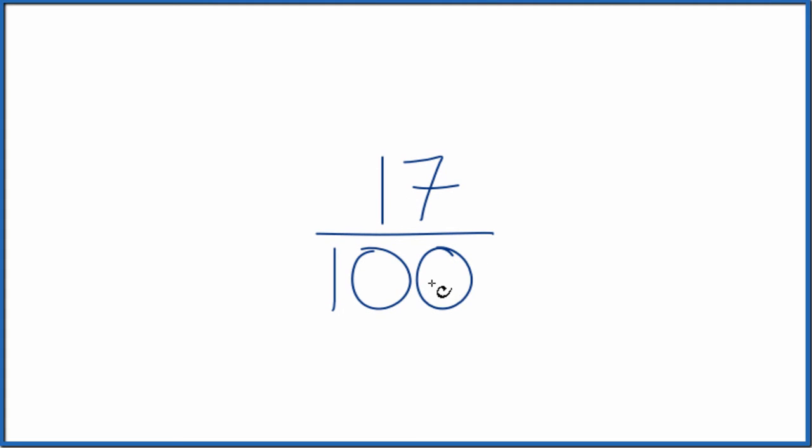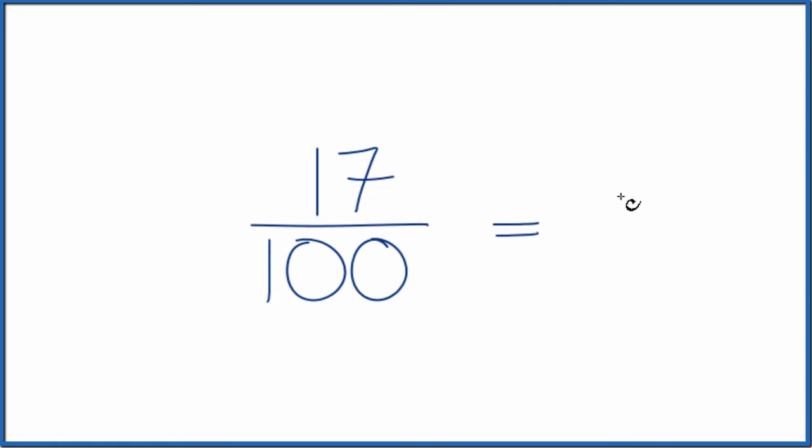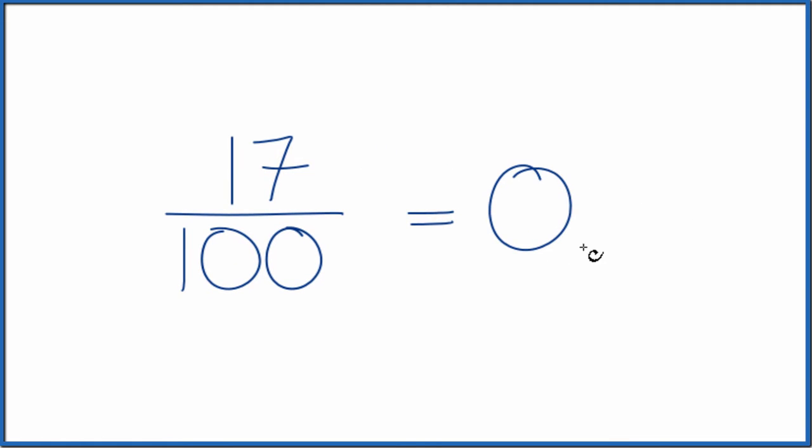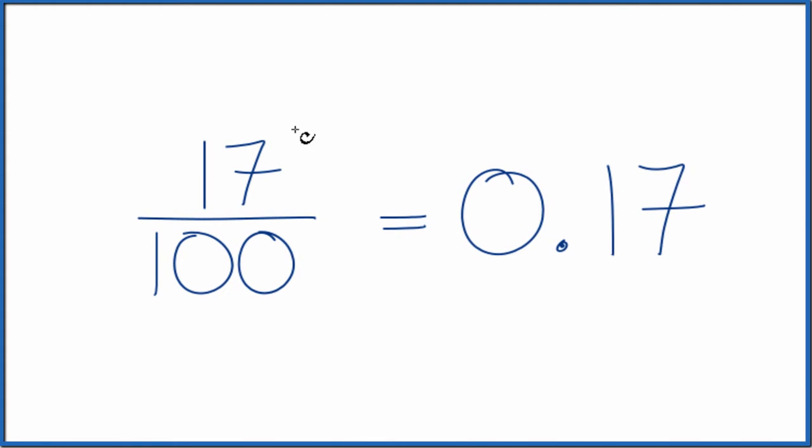Let's write the fraction 17 over 100 as a decimal, and there's a few ways we can do this. First off, we could just use a calculator or do division longhand, divide 17 by 100, we get 0.17. So the fraction 17/100 equals the decimal 0.17. It's the same value, just different representations.